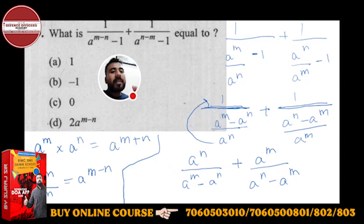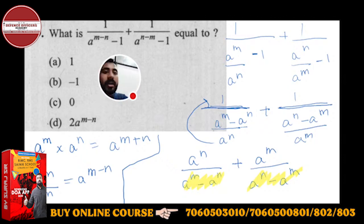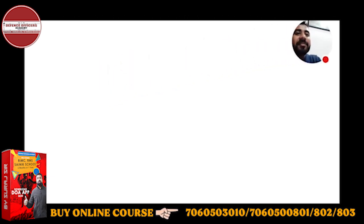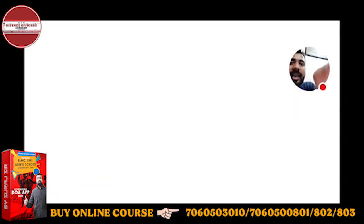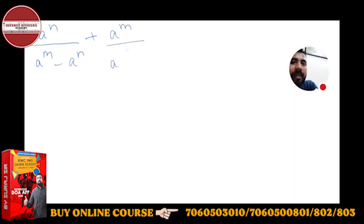Now observe — before taking LCM, if you observe that the base here is (a^m − a^n) and here it is (a^n − a^m), the bases are not the same. If I make the bases the same, it will be very easy to solve. So let me write it on the next page carefully. So we will write it as: a^n upon a^m, then a^m upon (a^m − a^n), plus a^m upon (a^n − a^m).